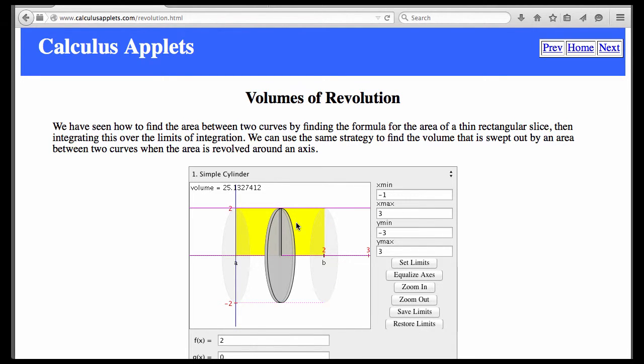Now when I say disc, think of like a frisbee or a coaster on which you would put a drink on a table. That's what we're talking about. So let's go back to the lesson and get started on how we're going to piece together a definite integral to actually find these volumes.